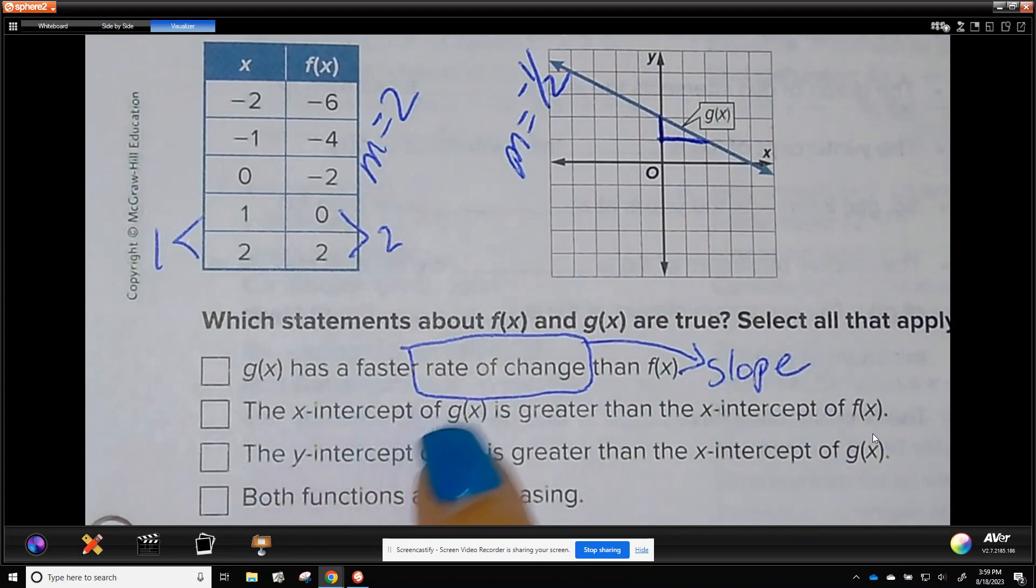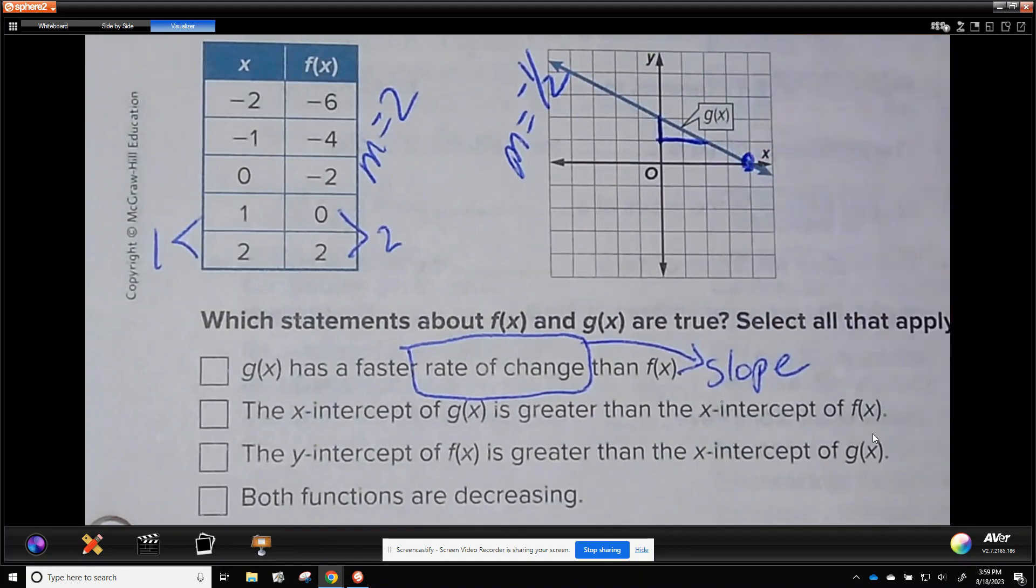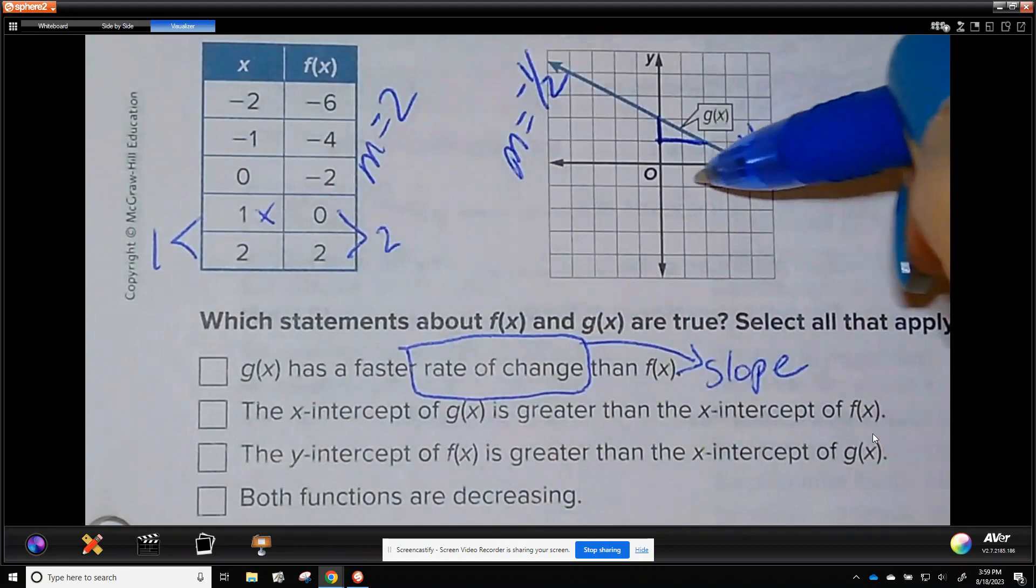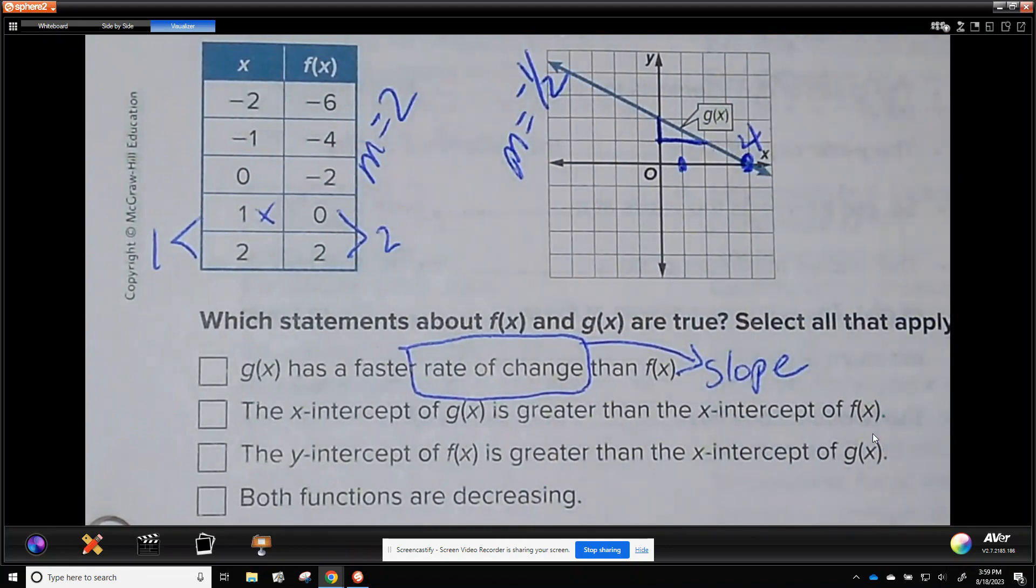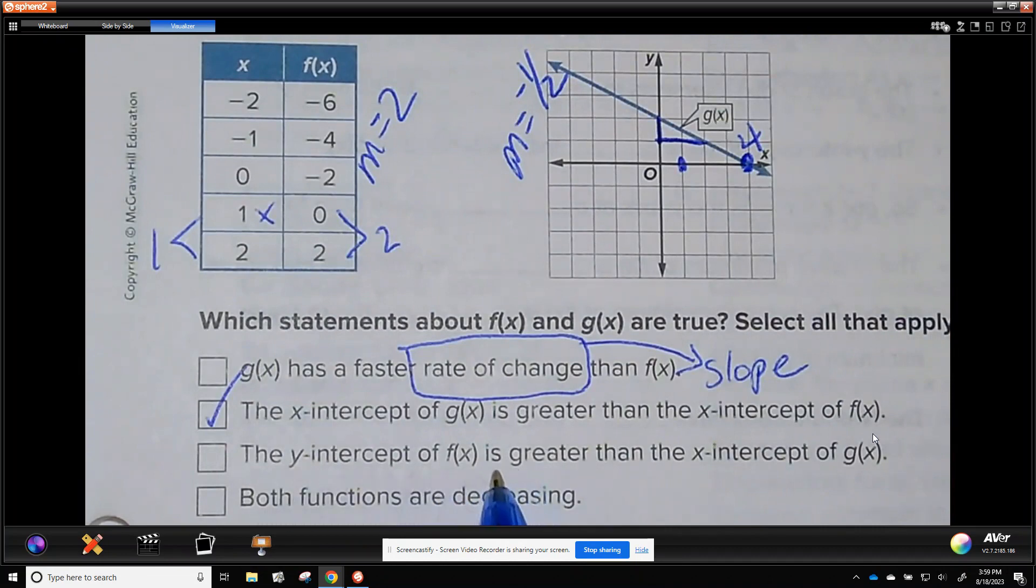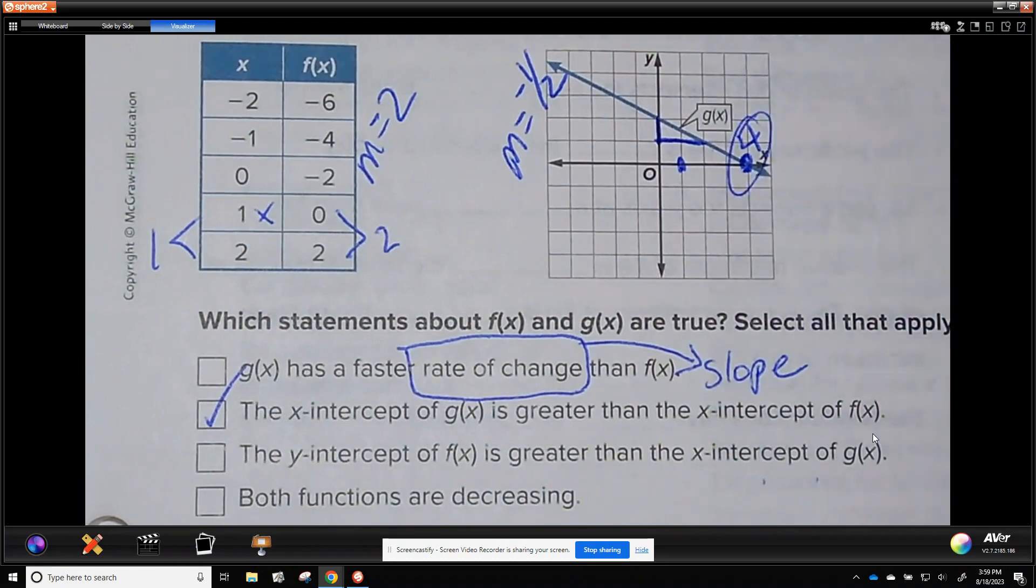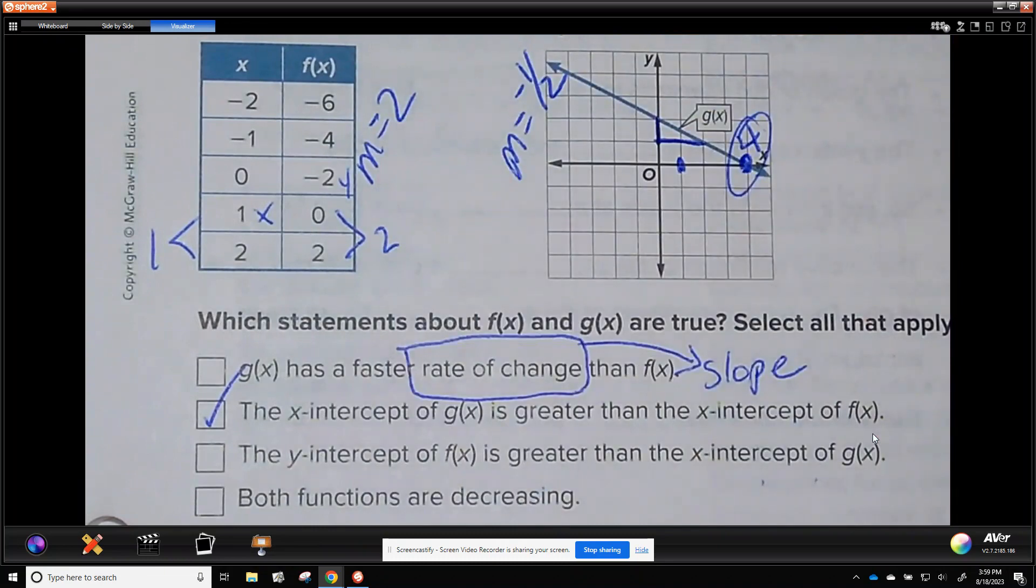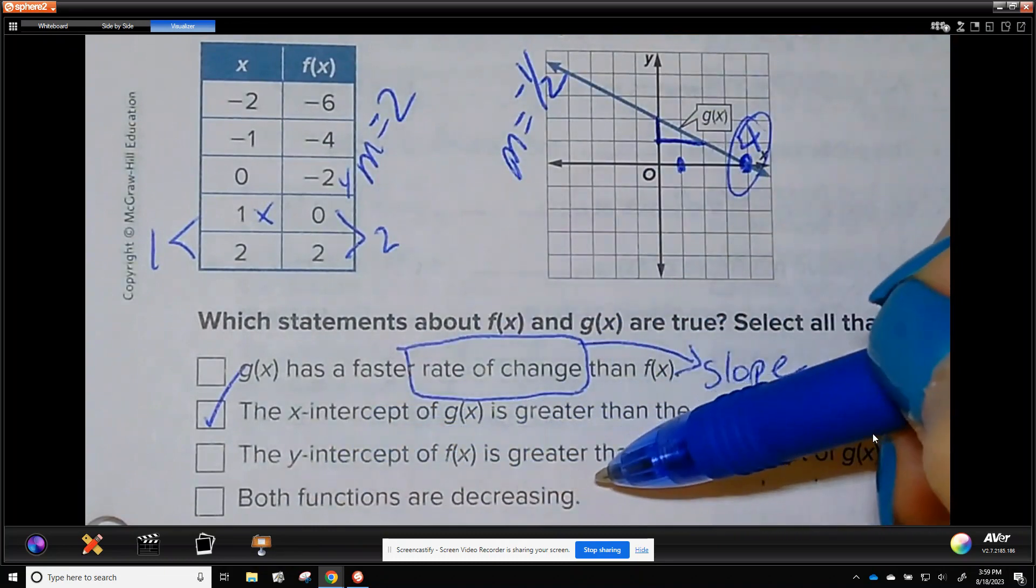The x-intercept of g is greater than the x-intercept of f. x-intercept of g looks like 4. x-intercept of f is 1. So it's right there. So that looks true. The y-intercept of f is greater than the x-intercept of g. So again, x is 4. The y-intercept is negative 2. So that one's not true.